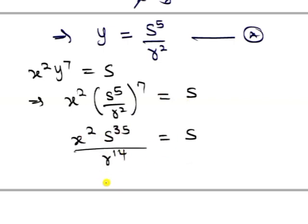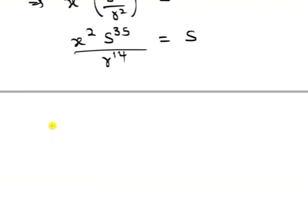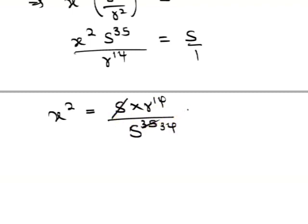So at this point, we'll try to make x the subject by cross-multiplying. And that's going to give us x^2 alone is equal to... this will reduce this to 34. And so we'll have r^14 / s^34.